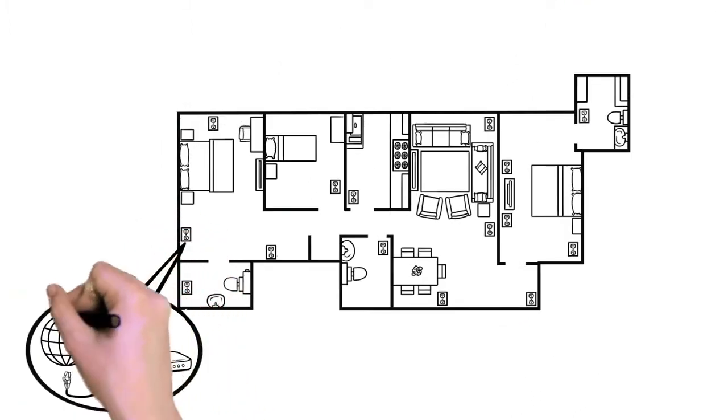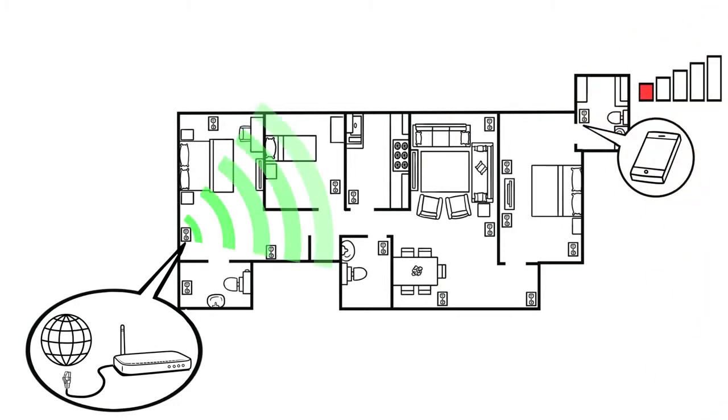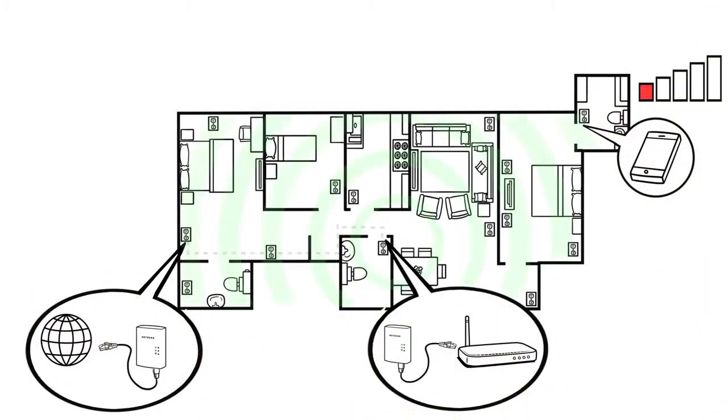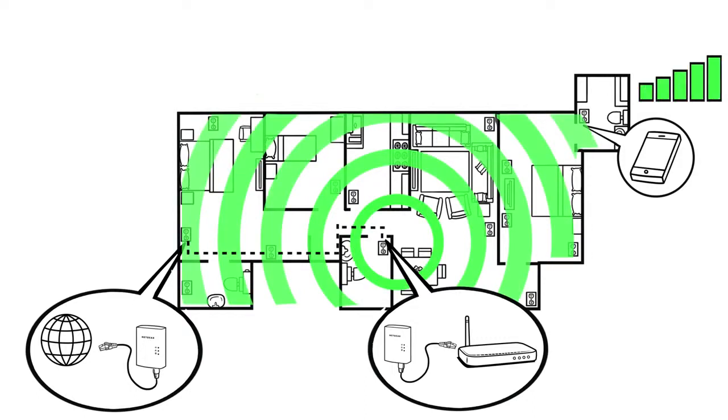You can even use Powerline adapters to move the current location of your Wi-Fi router to a more central location, so your Wi-Fi can cover more of your home instead of being tied to the location of your cable or DSL modem.